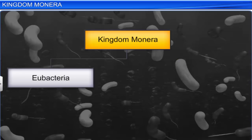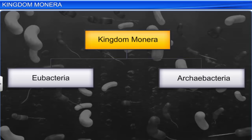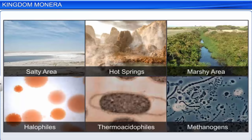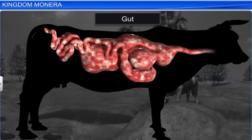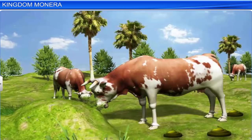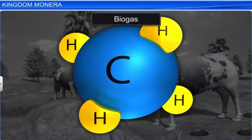Apart from bacteria, there are special bacteria that live in extreme conditions. For example, halophiles live in extremely salty conditions, thermoacidophiles live in hot springs, while methanogens are present in the gut of ruminant animals such as cows and buffalos. These bacteria are responsible for the production of methane, also referred to as biogas, from the dung of these cattle.